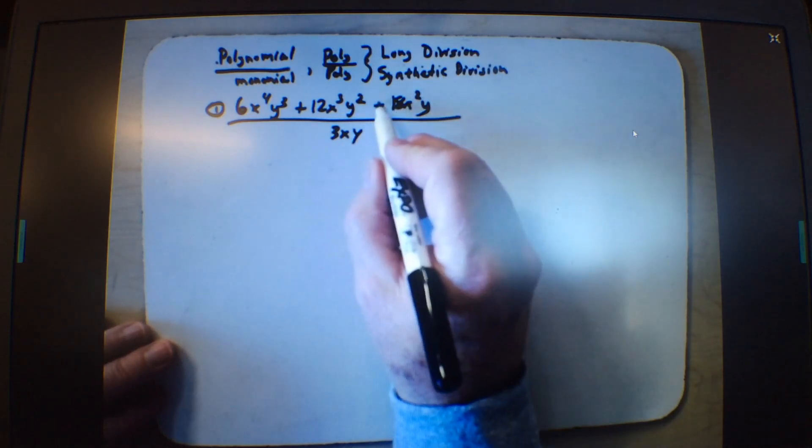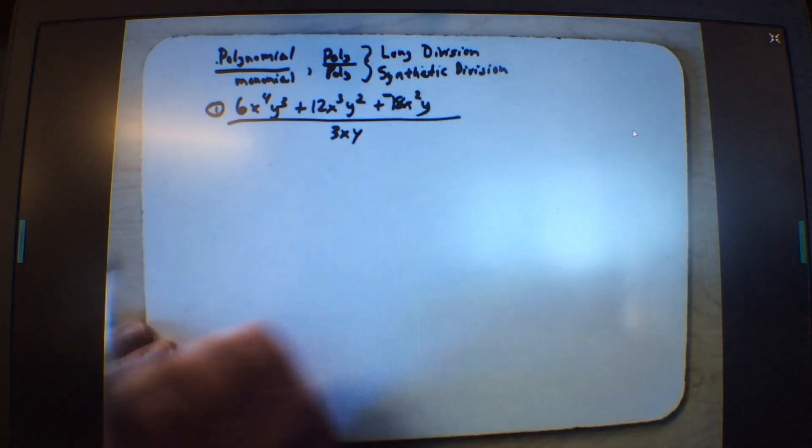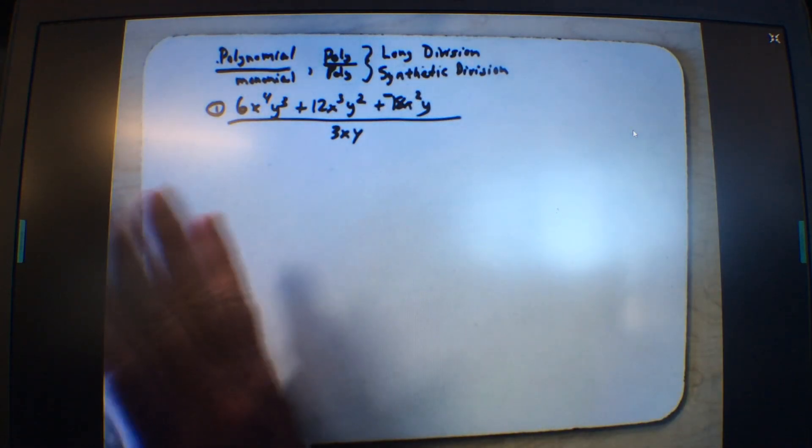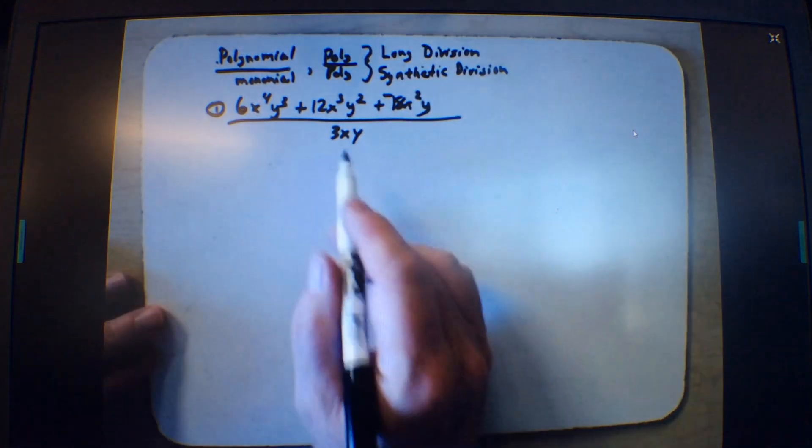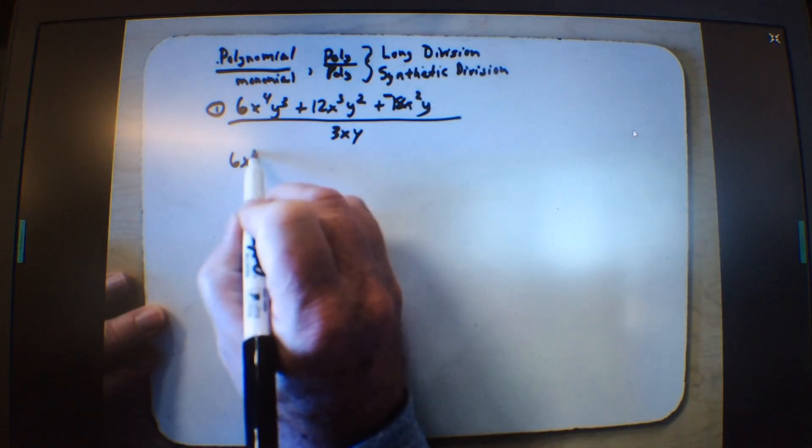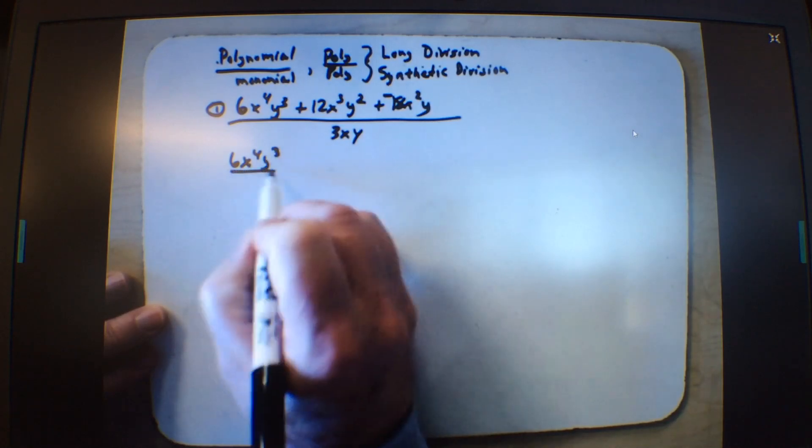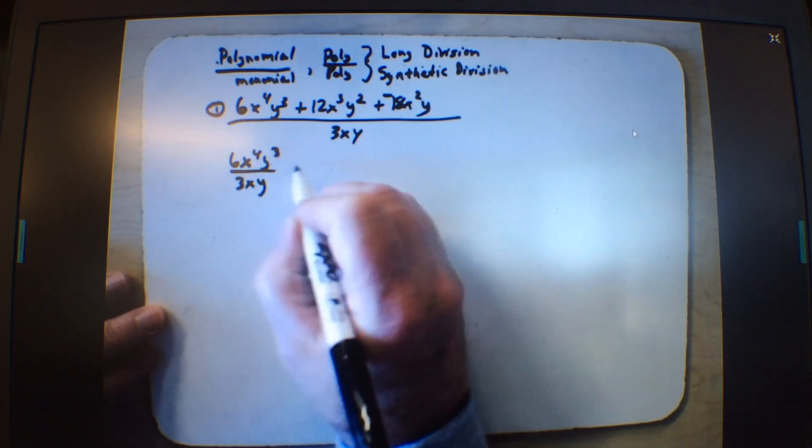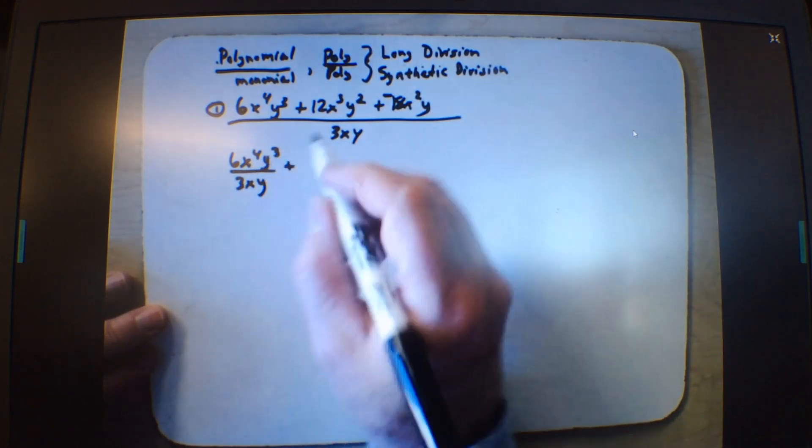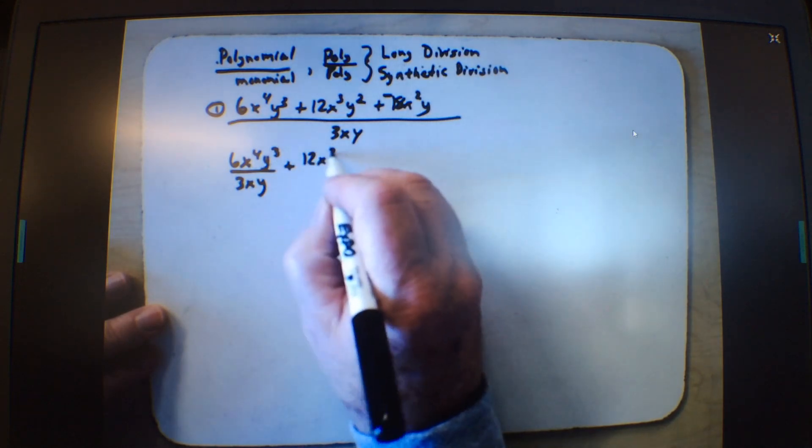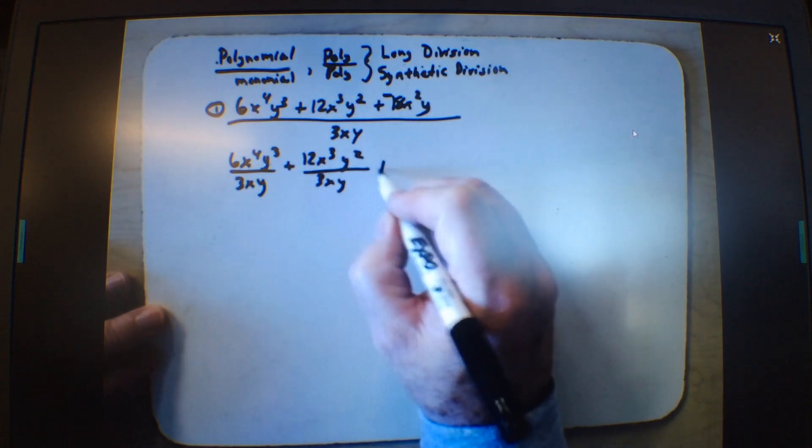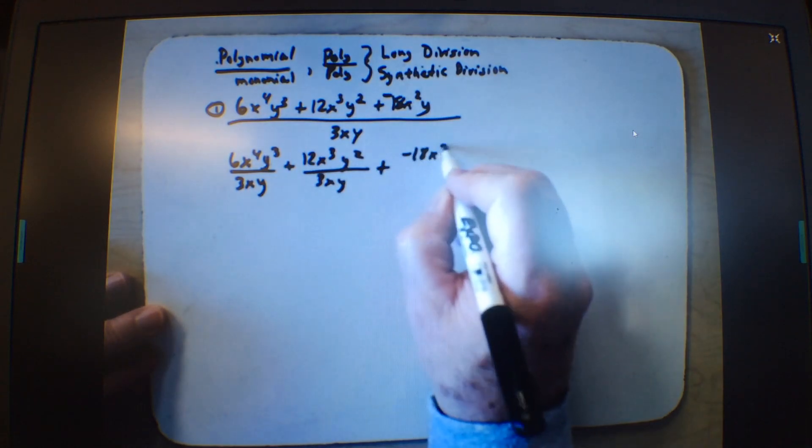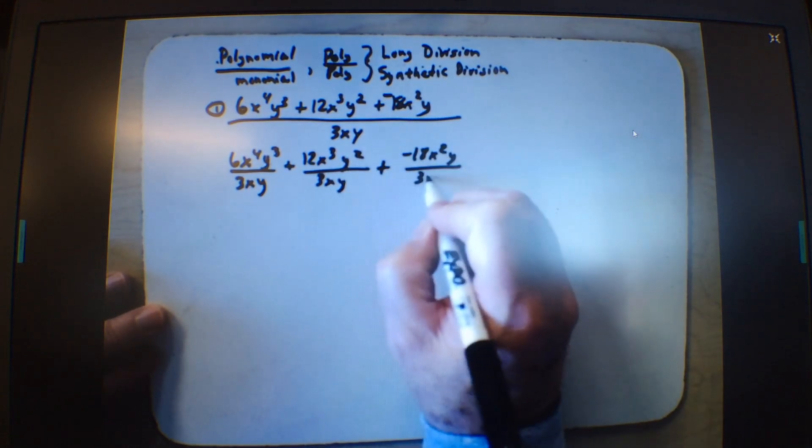So the first thing is change all subtraction to addition. I think that works best. And then you break it up so that it's every member of the polynomial divided by this monomial. So it's 6x to the 4th, y to the 3rd, over 3xy, plus 12x to the 3rd, y squared, divided by 3xy, plus negative 18x squared, y, all over 3xy.